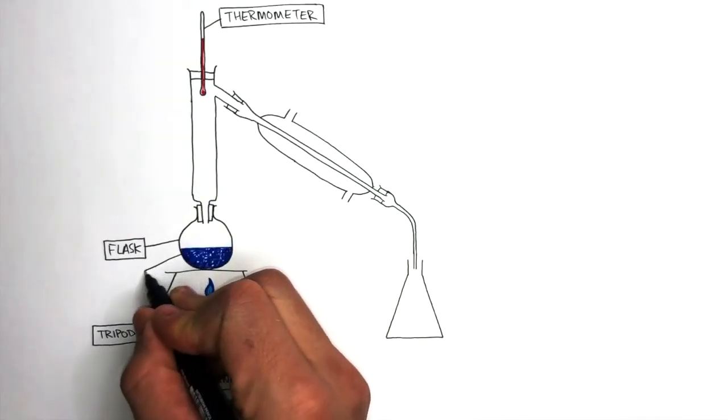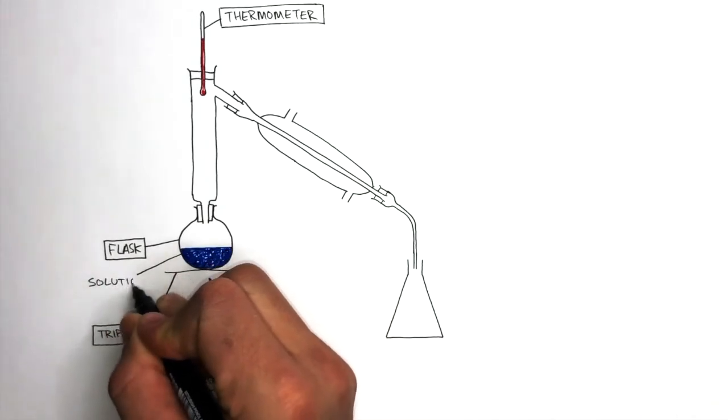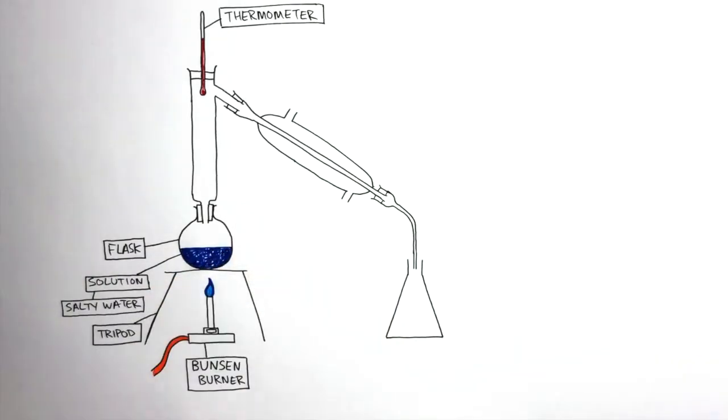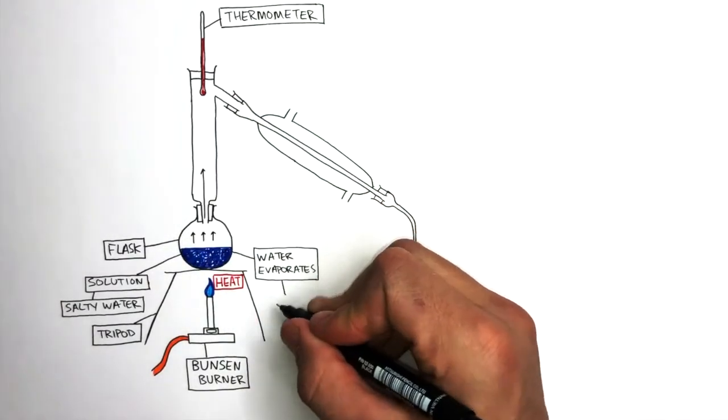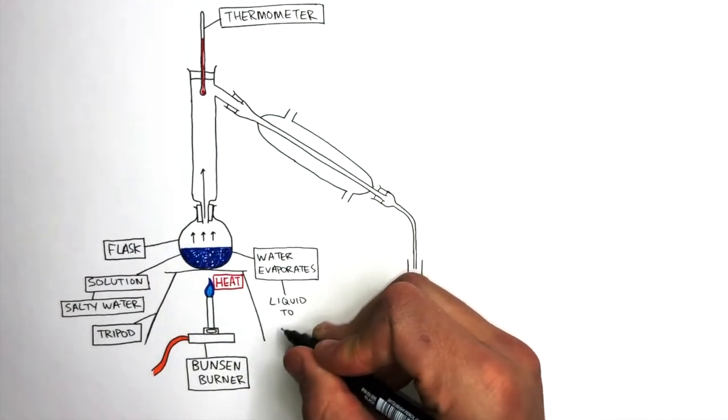In this example we are distilling a solution of salty water. The Bunsen burner heats the mixture causing the water to evaporate, making the liquid turn into a gas.